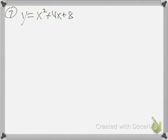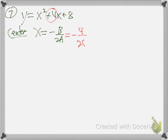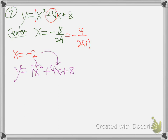That just won't factor. What two numbers multiply to be 8 and add to be 4? No numbers do that. What times what is 8? 2 times 4. No way they're going to add to be 4. It's just not factorable. So I'll just write not factorable - no x-intercepts. There's none.